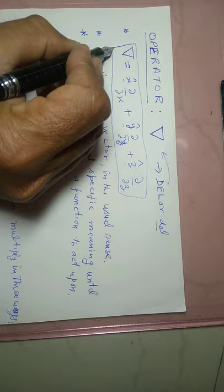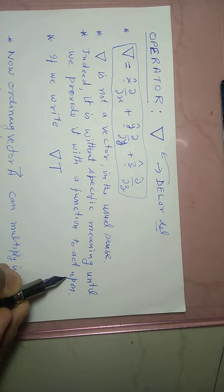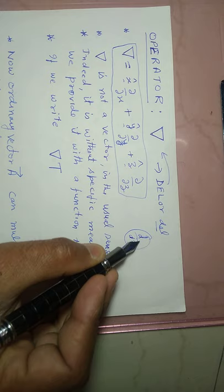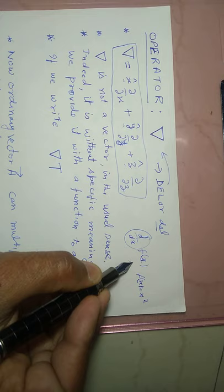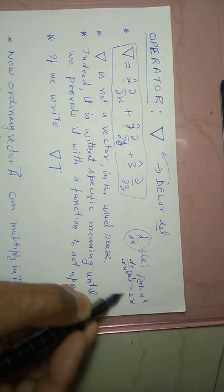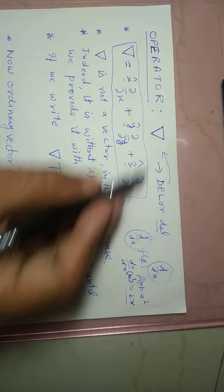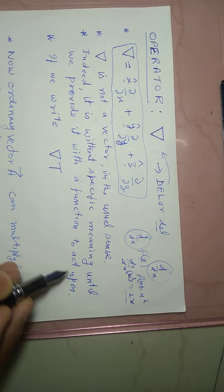Del is not a vector in the usual sense. Indeed, it has no specific meaning until we provide it with a function to act upon. In a similar fashion, for example, the derivative term d/dx is also an operator — it only gives significance when applied to a function, for example f(x) = x², where d/dx of x² gives 2x. Similarly, this del operator behaves the same way: it has no specific meaning until we operate it with a function.